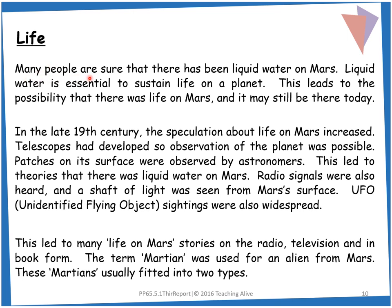So: life. Many people are sure that there has been liquid water on Mars. Liquid water is essential to sustain life on a planet. This leads to the possibility that there was life on Mars, and it may still be there today. In the late 19th century, the speculation about life on Mars increased. Telescopes had developed, so observation of the planet was possible. Patches on its surface were observed by astronomers. This led to theories that there was liquid water on Mars.